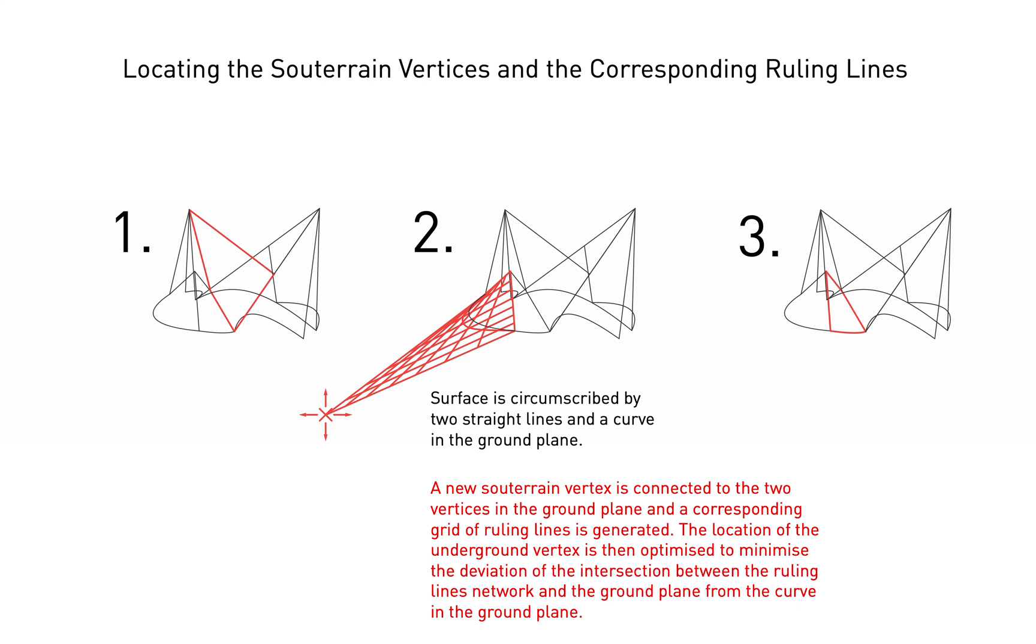Surfaces in the second category are circumscribed by two straight lines and a curve in the ground plane. To complete this kind of surface, we place a fourth vertex arbitrarily at a souterrain location and then optimize the location of that vertex such that the intersection points between the resulting grid of ruling surfaces and the ground plane approximates the floor plan curve in Xenakis' drawing. In this and in most other optimization processes in this procedure, we used three different optimization algorithms successively: first the global RBF-Opt in Opossum, second the global CMA-ES also in Opossum and third the local Bobyqa in GOAT. Opossum and GOAT being optimization plugins in Rhino Grasshopper.